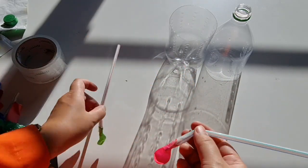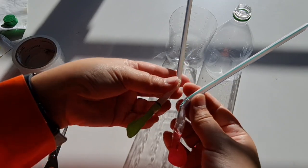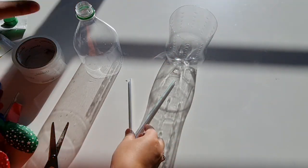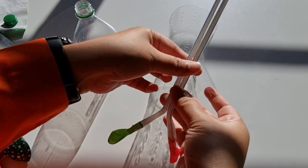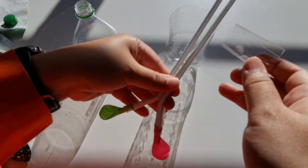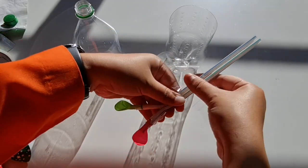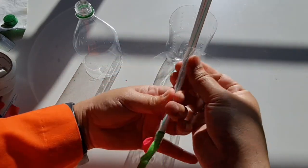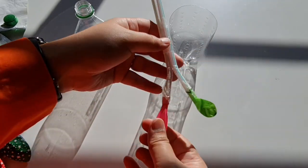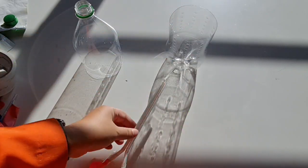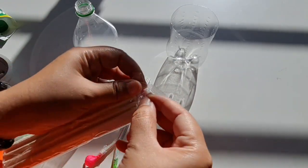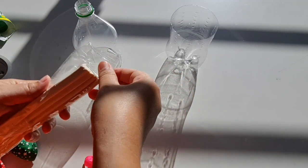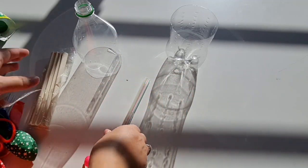So now you already have two straws with balloons, small balloons attached to it at the end of it. So what are we going to do now? We're going to tape these two. We're going to tape these two together. This is slightly smaller than this one.